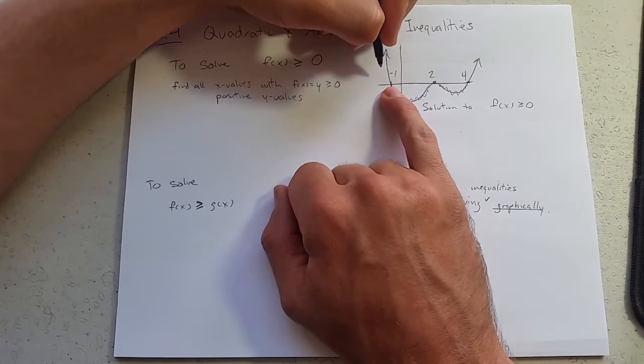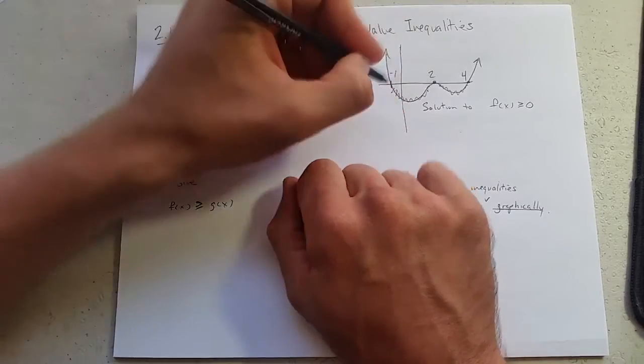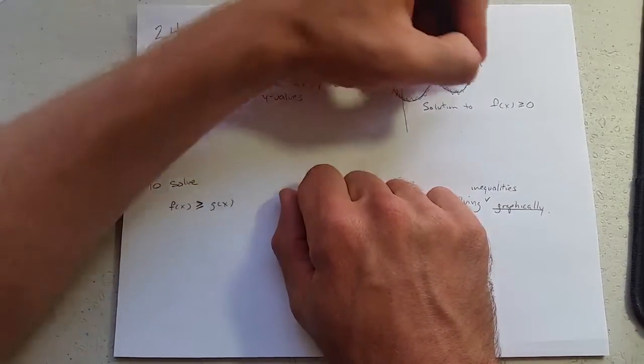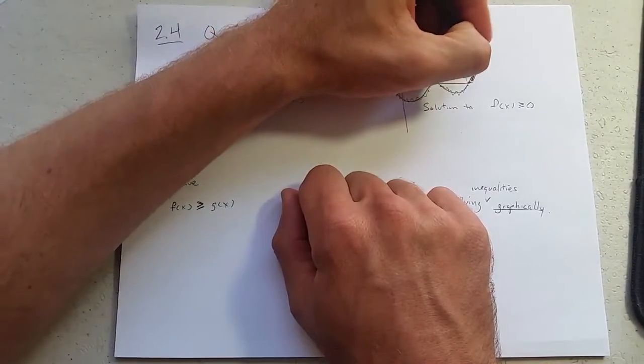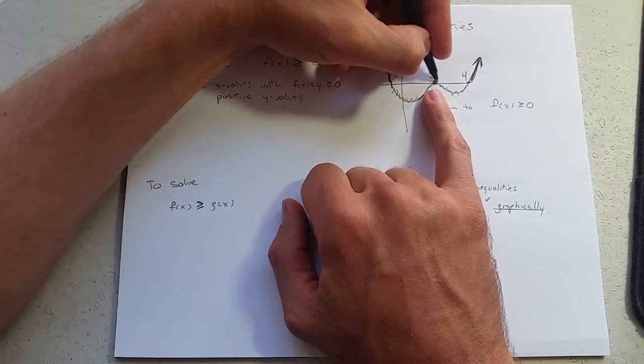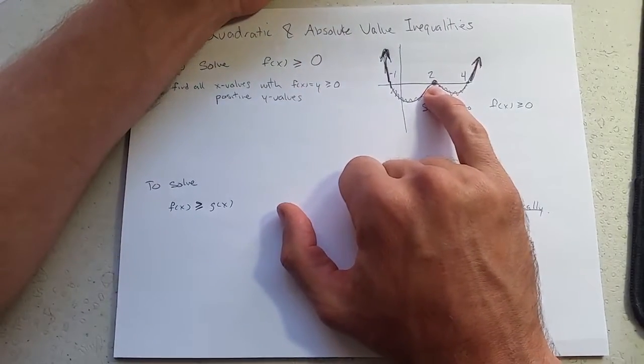So we're going to go and shade in the parts that we want. So we want this part. I call these the horns. Right here, the two ends. We also want this point right here at x equals 2.